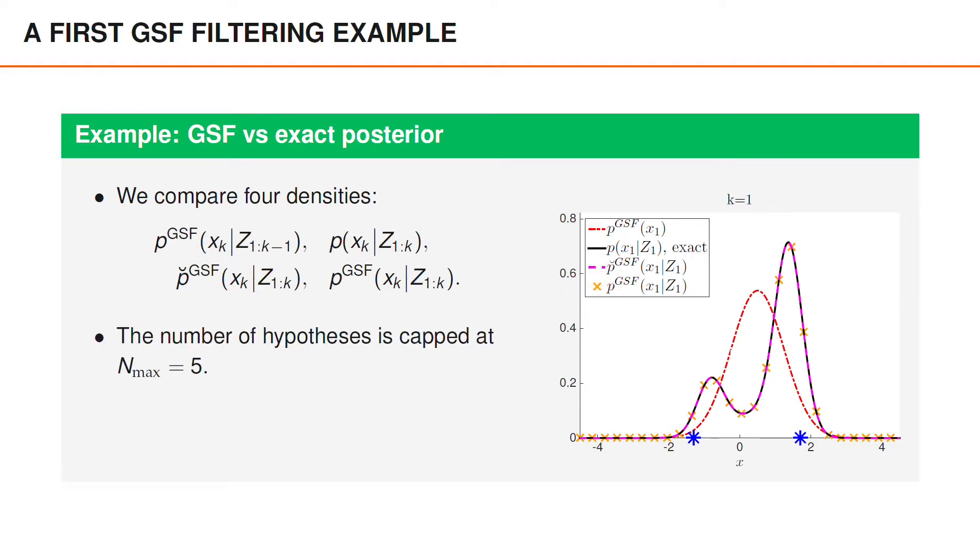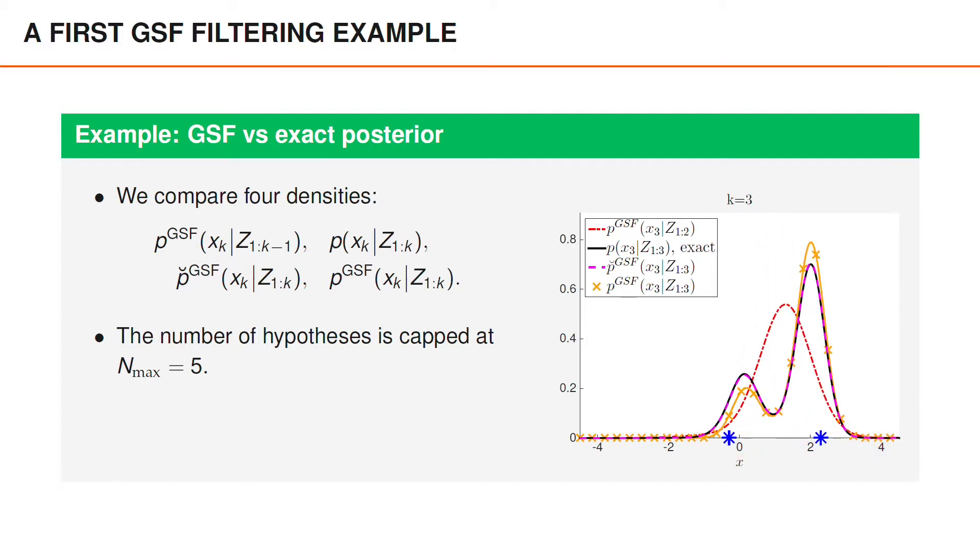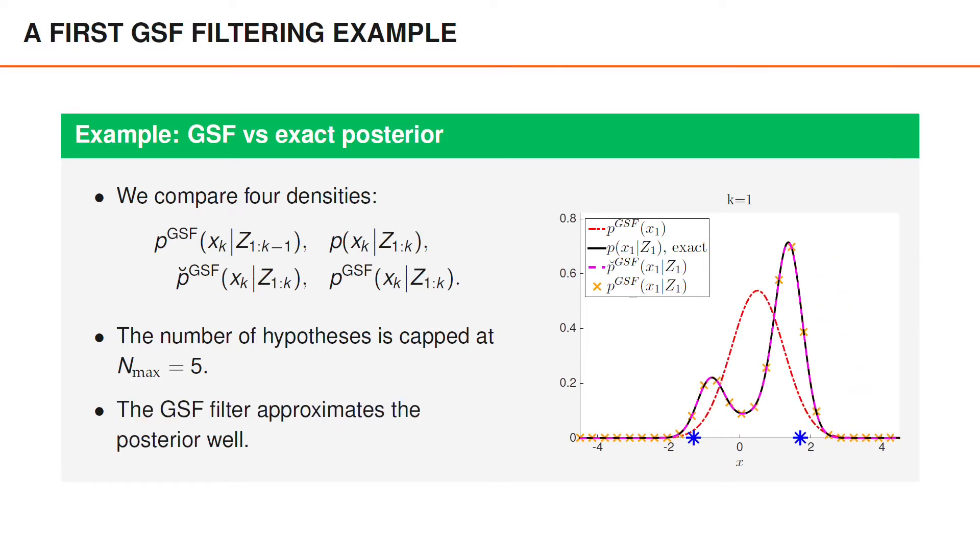In these simulations, we use a filter that caps the number of hypotheses to 5. We could have maintained many more hypotheses, but that would make it difficult to distinguish the Gaussian sum filter from the true posterior in these toy examples. Both at time 1 and time 2, the posterior in black looks identical to the Gaussian filter posterior. At time 3 and at time 4, we can see that the Gaussian sum filter has introduced approximation errors, but these errors again shrink somewhat when we continue to time 5 and time 6. Overall, the Gaussian sum filter approximates the posterior density well in this example.